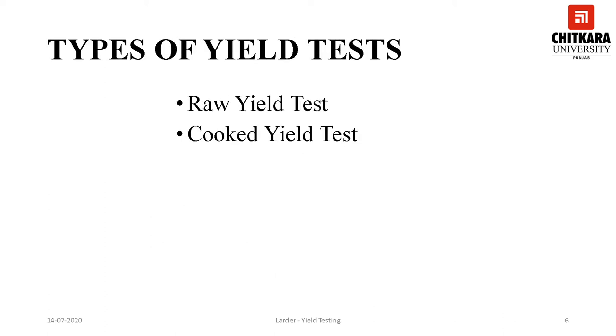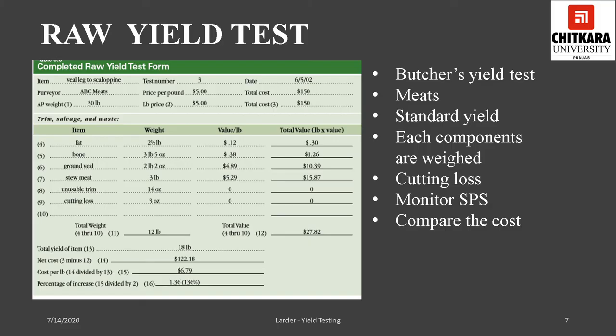Generally, yield is calculated using two methods: first is the raw yield test, and second is the cooked yield test. The raw yield test is also known as the butcher's test. As the name states, the butcher's test is mainly done for meats, fish, and poultry purchased as wholesale cuts. It is used to determine the standard yield and portion cost of those items portioned before cooking. For the purpose of conducting a butcher's test, a specific format is used, called the raw yield test form, in which all required details of the item to be tested are mentioned.